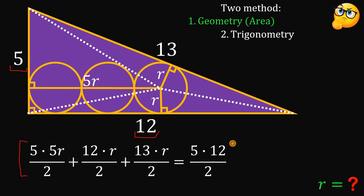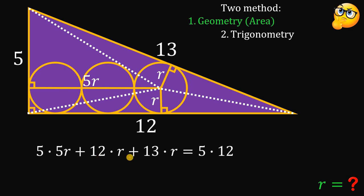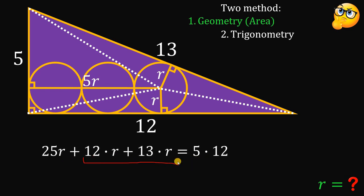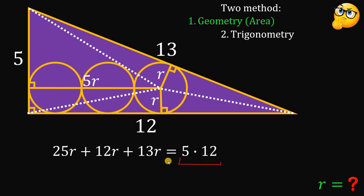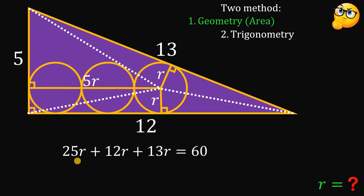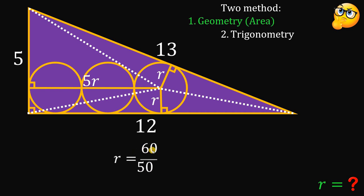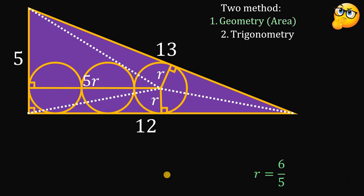Now we solve for r. Multiply all terms by 2 to eliminate the denominator: 5(5r) + 12r + 13r = 5 × 12. Simplifying: 25r + 12r + 13r = 60, which gives 50r = 60. Dividing both sides by 50: r = 60/50 = 6/5. So using geometry, r equals 6/5.